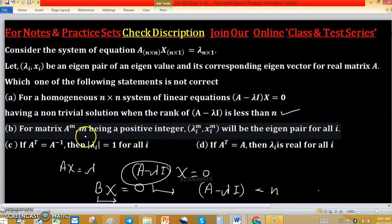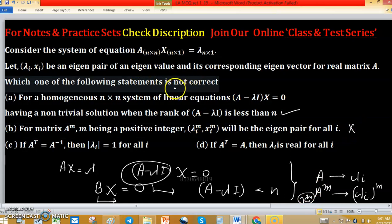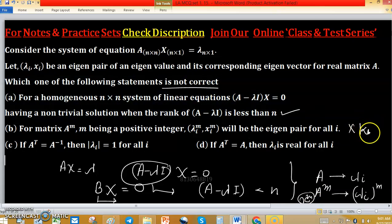For matrix A raised to the power m, m being a positive integer, this is option B. Lambda raised to the power m, x raised to the power m will be the eigenpair for all i. So if eigenvalue of A is lambda i, then eigenvalue of A raised to the power m will be lambda i raised to the power m but eigenvector may not be x raised to the power m. So this statement is wrong and asked about which is not correct. So option B will be key.